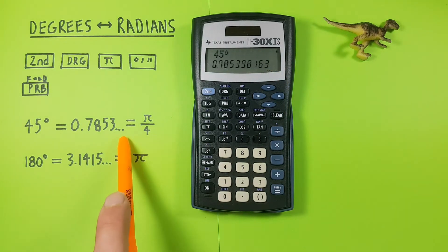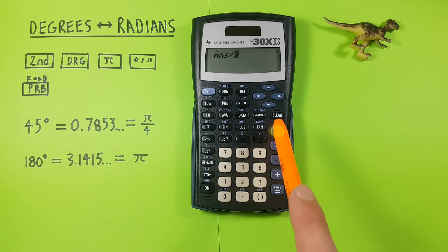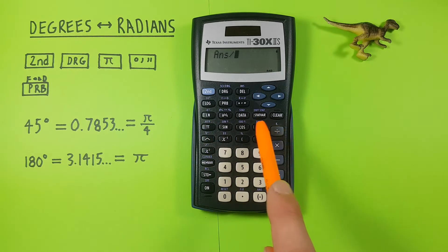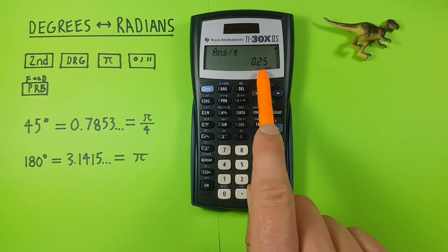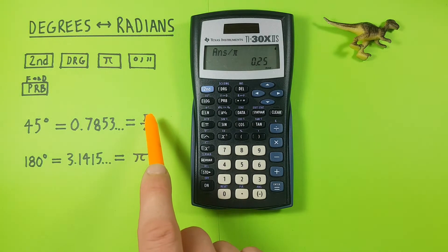But what if we want it in this format? Well to do that, first what we have to do is divide our result by pi. So we go divide pi, press equals, and we see this gives us 0.25 which we should know is 1 over 4. But if we don't know that off the top of our head, we can use the conversion key which is the second function of the probability key.